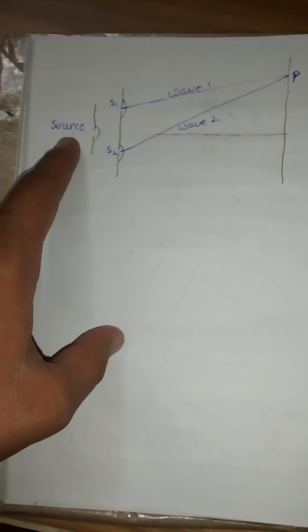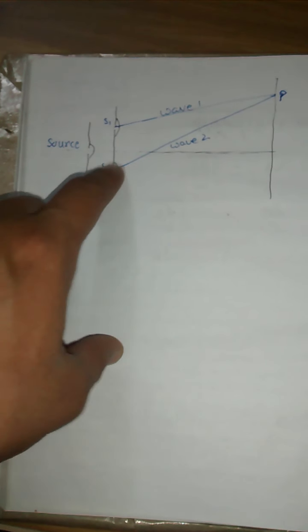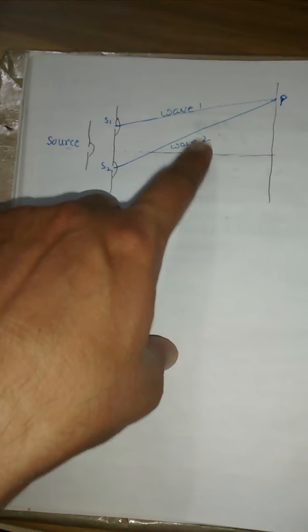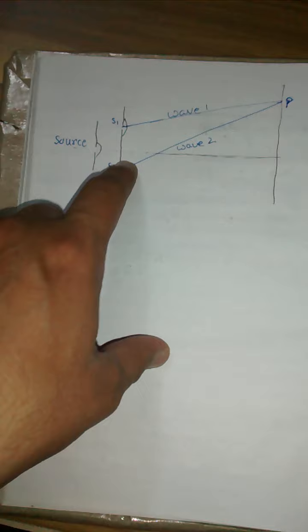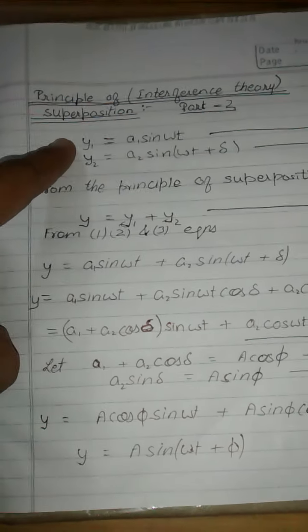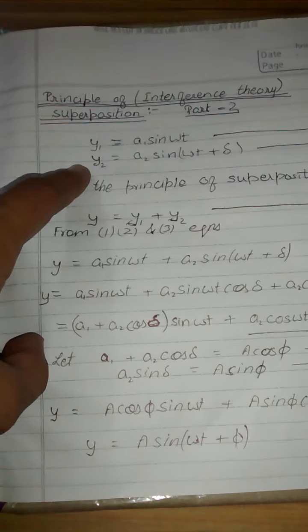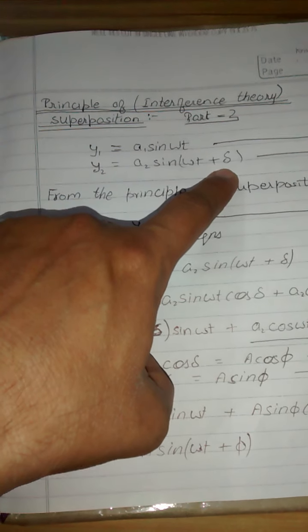Suppose there is a source, a single source, and we are making two coherent sources and obtaining the fringe at P. The wave y1 and the wave y2 are moving from source one and source two, and we obtain one fringe showing the phase difference phi.